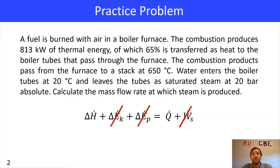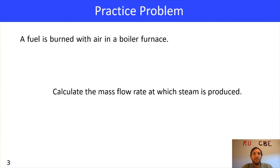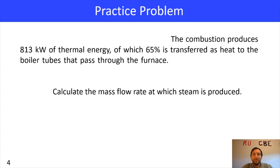I'm going to go through this problem line by line. The first line — a fuel is burned with air in a boiler furnace — really just helped us eliminate the work term and confirm that kinetic and potential energy are zero. The next line says the combustion produces 813 kilowatts of thermal energy, of which 65% is transferred as heat to the boiler tubes that pass through the furnace.